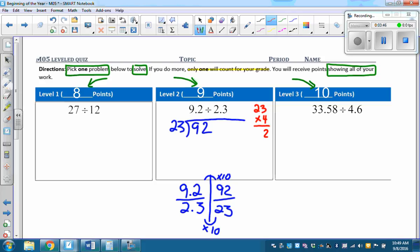4 times 3 is 12. 2 times 4 is 8 plus 1 is 9. So it looks like 4 is the number here. No remainder. So my answer is 4.